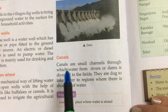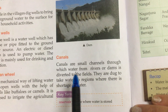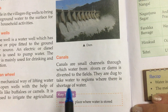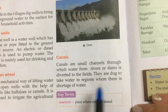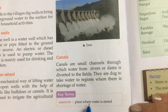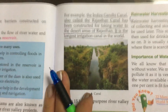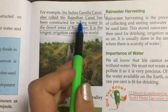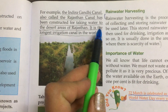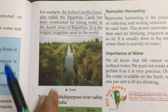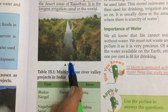Therefore, dams are also known as multi-purpose river valley projects. As you can see, this is a picture of a dam. Now, canals: canals are small channels through which water from rivers or dams is diverted to the fields. They are dug to take water to regions where there is shortage of water. Reservoir means a place where water is stored.